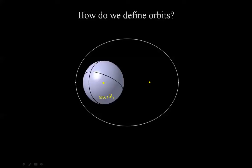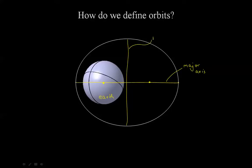In this orbit, we see that there is a long axis, because it is an ellipse, and as any ellipse, there is a short axis. The long axis is known as the major axis, and the short one is known as the minor axis. Along the major axis, there is a point that comes closest to the center of the Earth, and another point that goes the furthest away from the center of the Earth. These two points together are known as the apsides — the closest being the periapsis, and the furthest being the apoapsis.